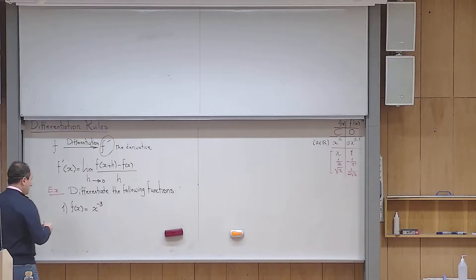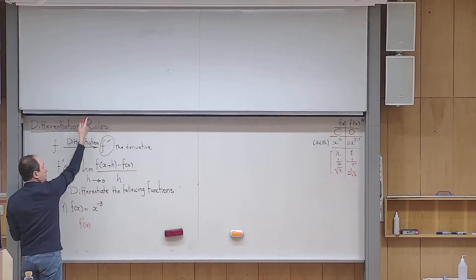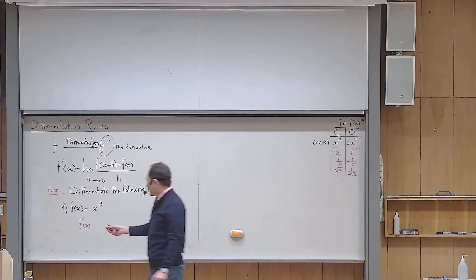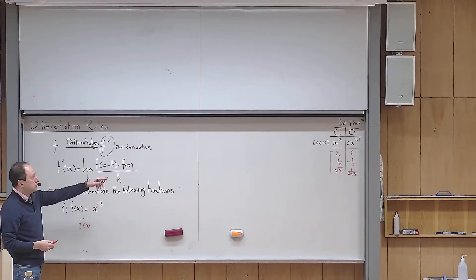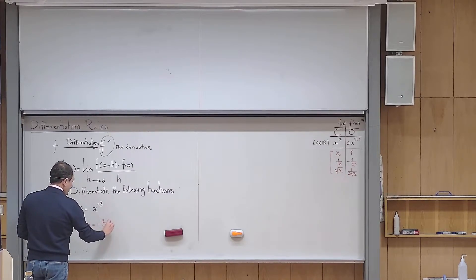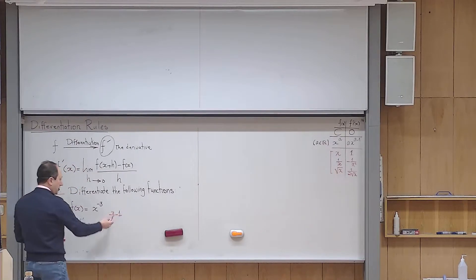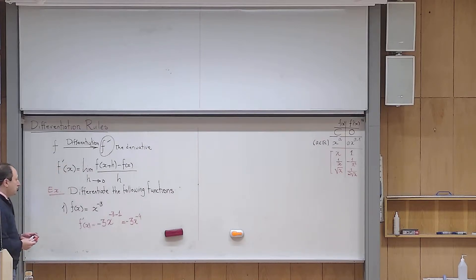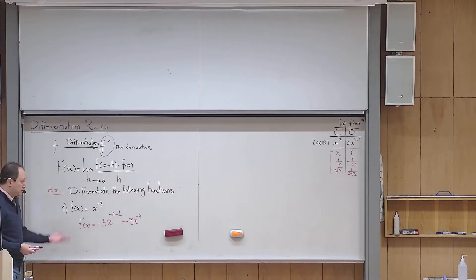Using the power rule: −3 goes down and the power reduces by one, giving f′(x) = −3x^(−4). This is the end of the differentiation process. I won't simplify to positive powers since the function was given with a negative power, but it doesn't hurt if you want to.